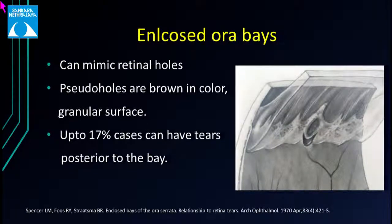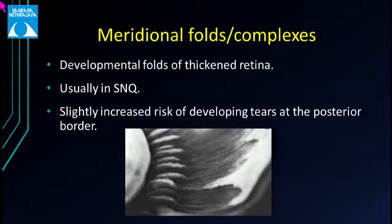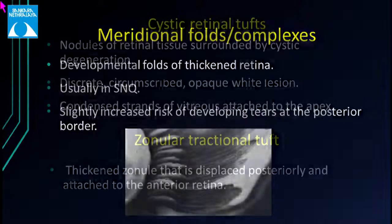An enclosed ora bay can mimic a true hole and is called a pseudo-hole. Differentiation from an actual retinal hole: the surface appears brownish with a granular appearance. One study found up to 17% of cases have tears posterior to the bay. Meridional folds are developmental folds of redundant thickened retina at the ora, with traction in an anteroposterior direction and undermined edges, usually in the superonasal quadrant. A meridional complex forms when a fold aligns with an elongated ciliary process. Meridional folds carry a slightly increased risk of tears at their posterior border.